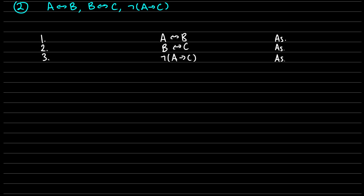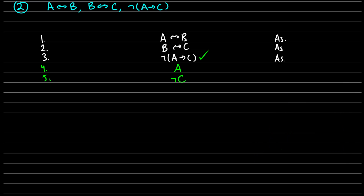I'm going to first deal with the formula in line three: not A arrow C. If we have not A arrow C, we know two things will happen. We cannot have A true and C false in a regular truth table for A arrow C. So if this negated conditional is true, it's the same as saying A arrow C is false, which happens when A is true and C is false — meaning not C is true. So in lines four and five, we get A being true and not C being true. This comes from line three via conditional decomposition.